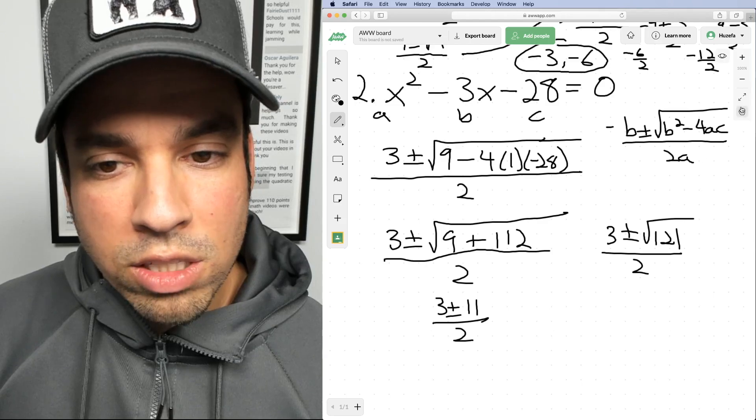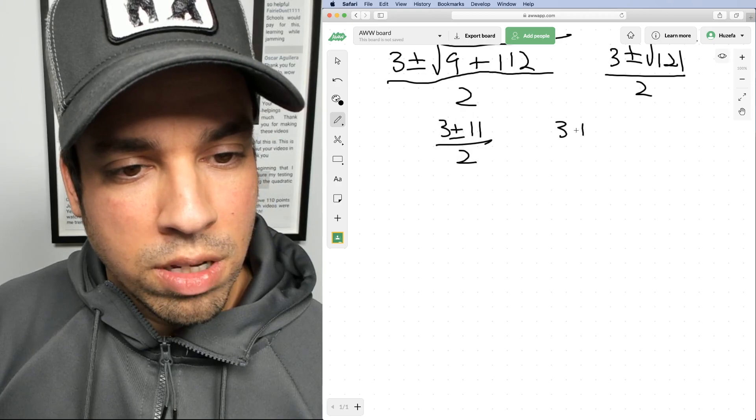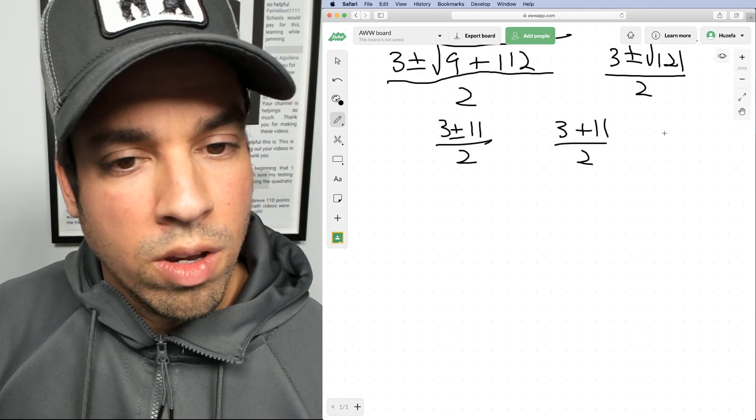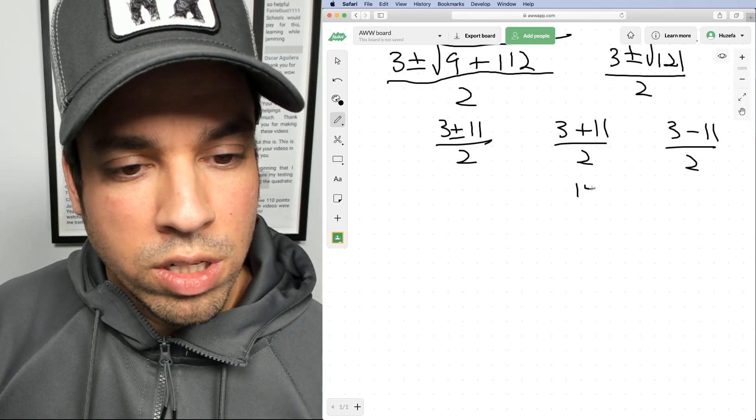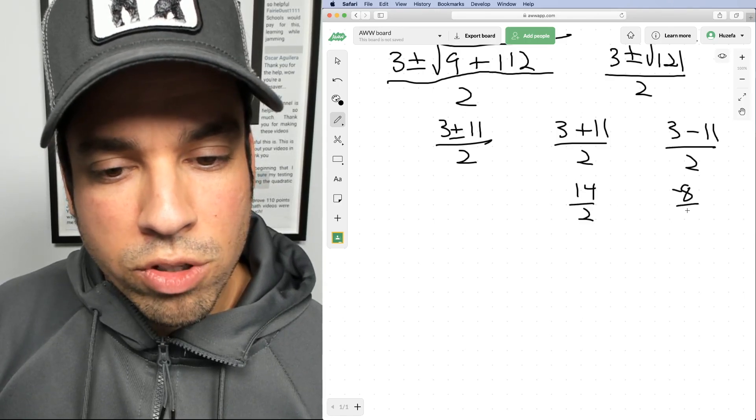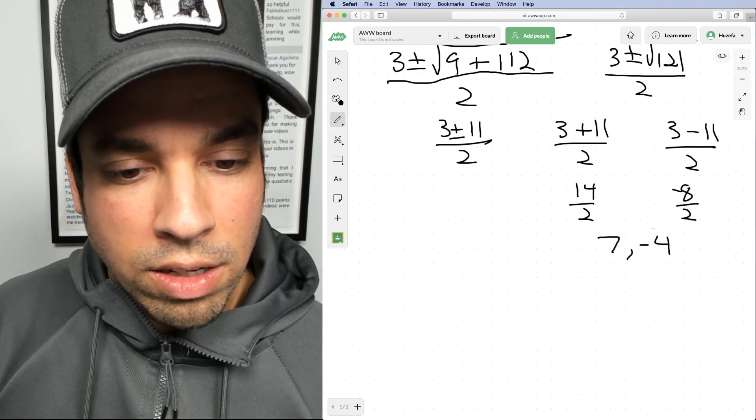So again, now we can split this into two different pieces. It becomes three plus 11 over two, and three minus 11 over two. So it's 14 over two and negative eight over two. So my two solutions are seven comma negative four.